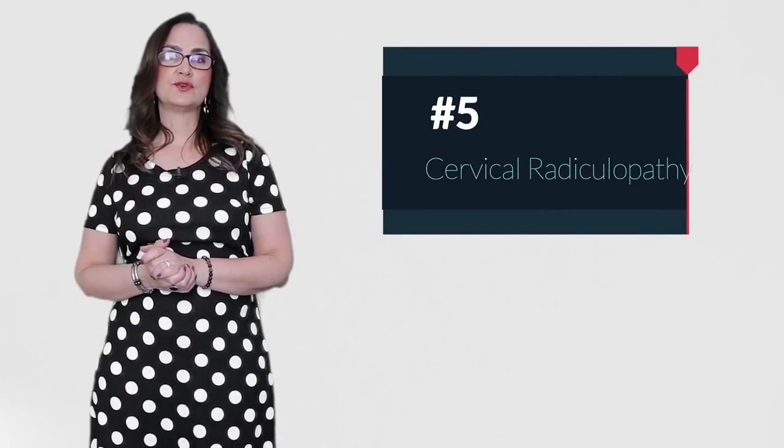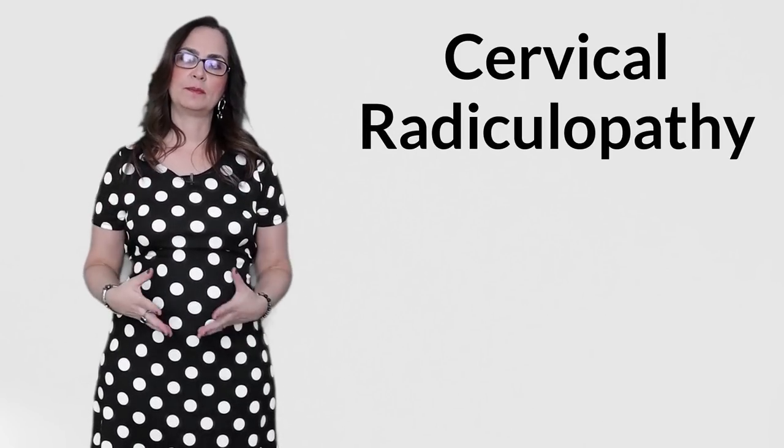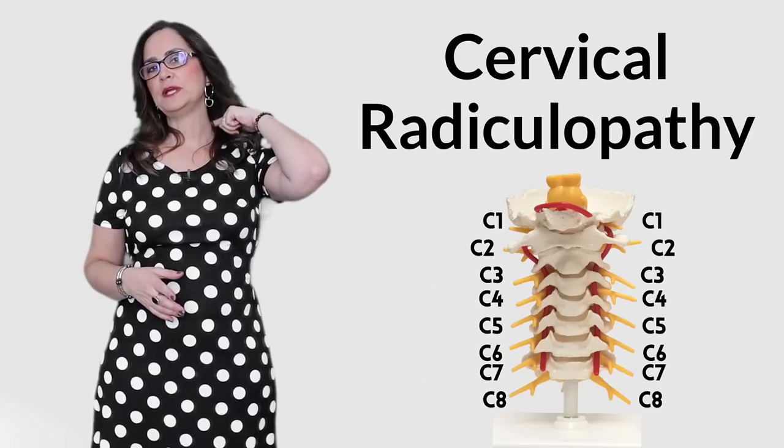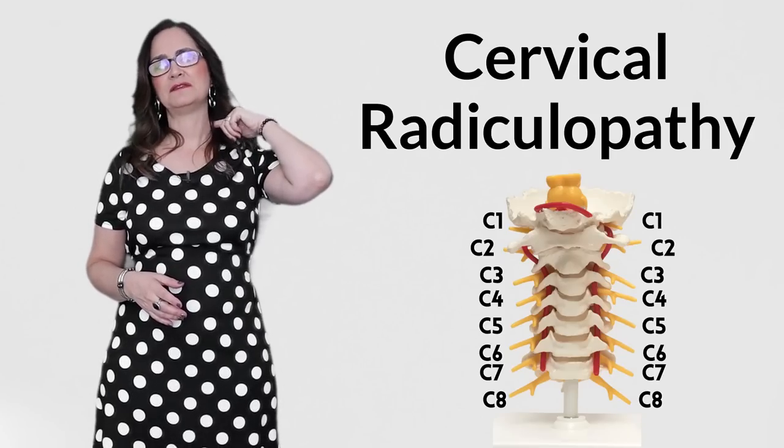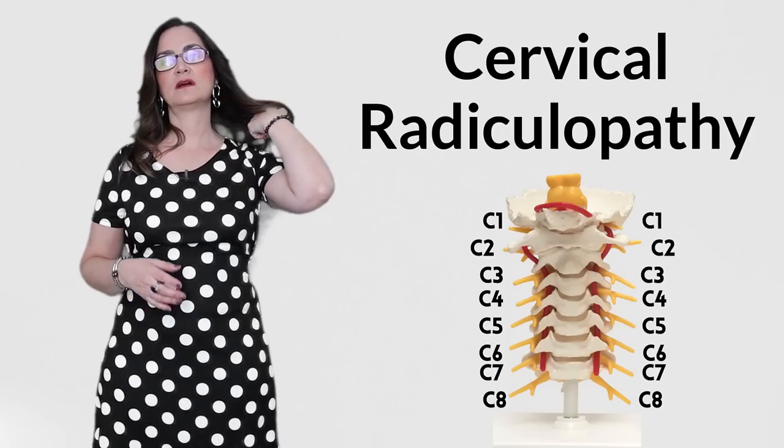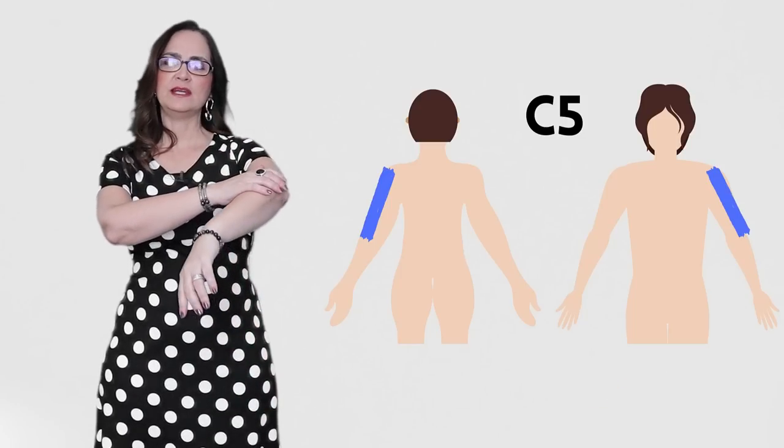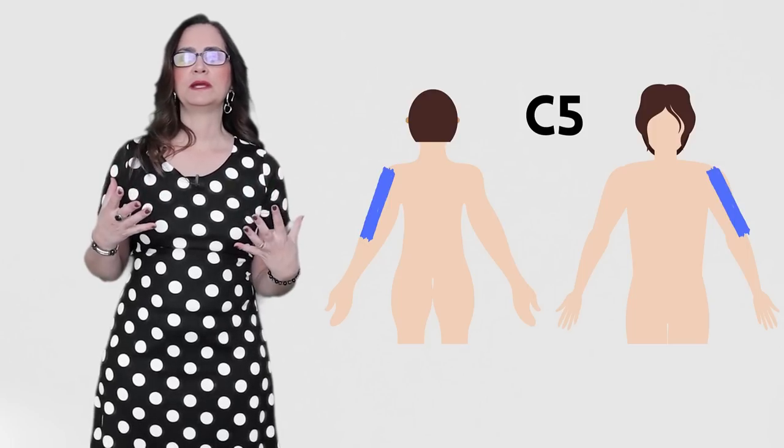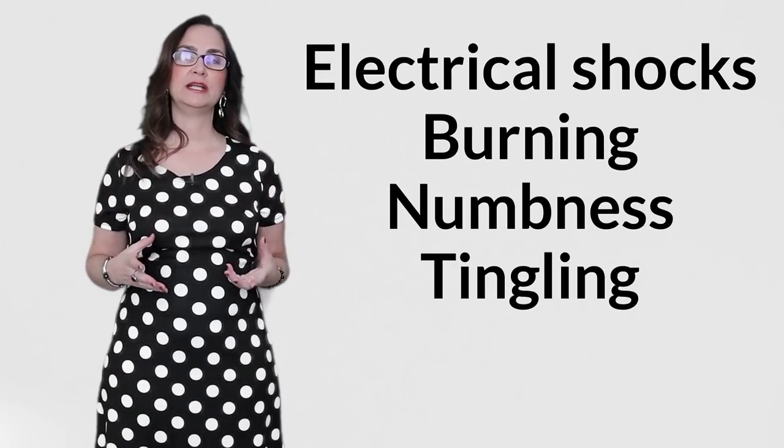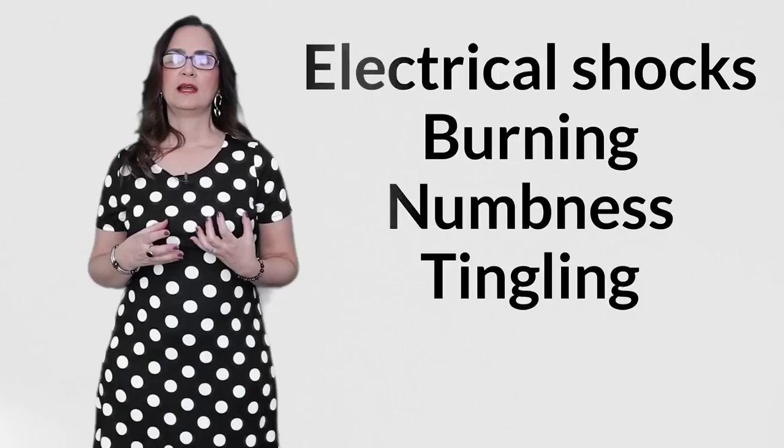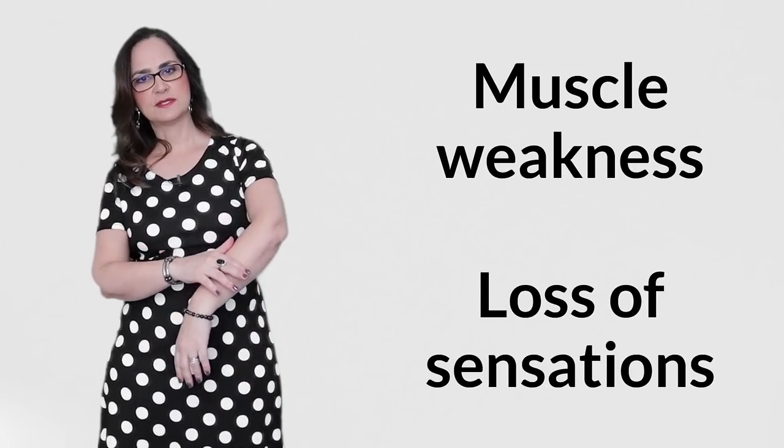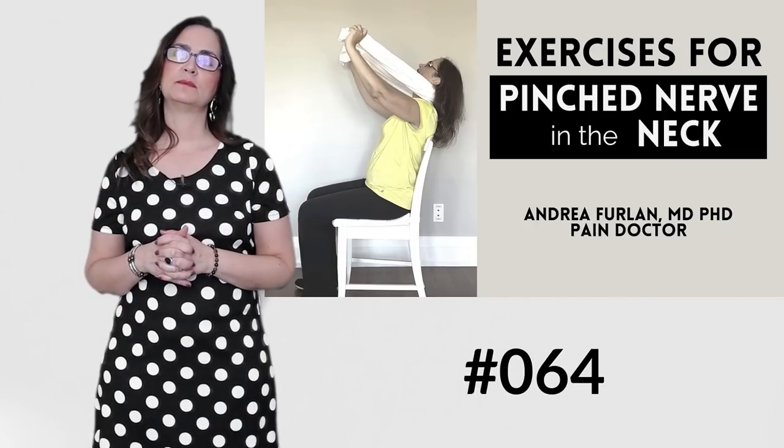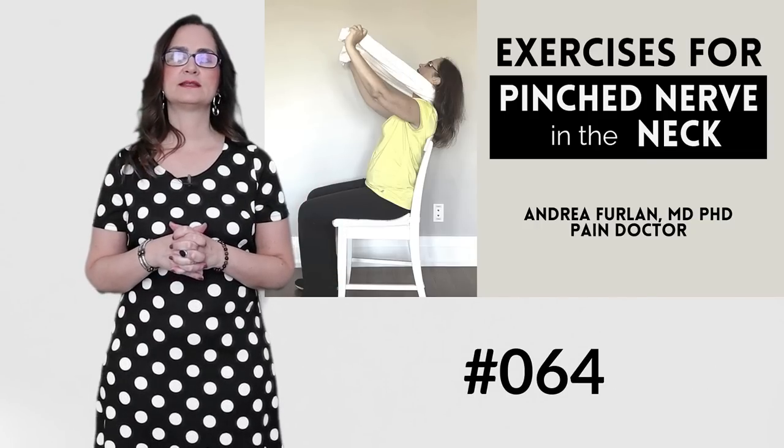Fifth, there are some situations where the person feels pain in the shoulder and even radiation to the arm and hands, but the problem is not in the shoulder. One of these problems is called cervical radiculopathy. This is when there is a pinched nerve in the neck. The person may have neck pain or not, but the main symptoms are neuropathic pain, nerve pain that radiates down the shoulder and arm. This is a different type of pain. It is usually electrical shocks, burning, numbness, tingling, and it may also have muscle weakness and loss of sensations. Check my other video about cervical radiculopathy. It is number 64.